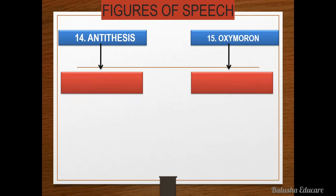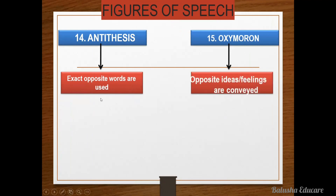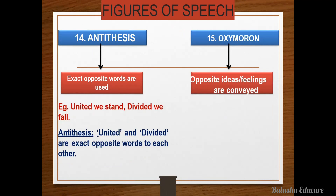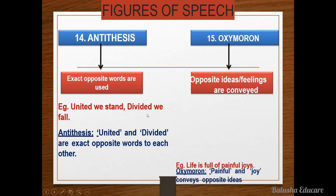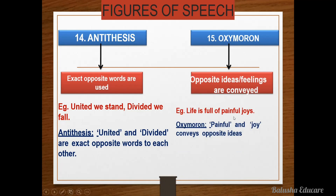Next figure of speech is antithesis, and this is a little bit similar to oxymoron. In antithesis, exact opposite words are used. In oxymoron, opposite ideas or feelings are conveyed. To understand exactly the difference, see this example: 'United we stand, divided we fall' — this is antithesis, because 'united' and 'divided' are exact opposite words to each other. Now see the oxymoron: 'Life is full of painful joy' — here 'painful' and 'joy' convey opposite ideas, but they are not exactly opposite words.